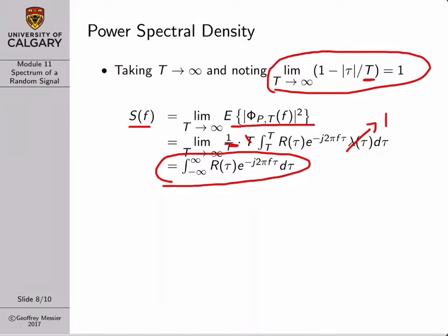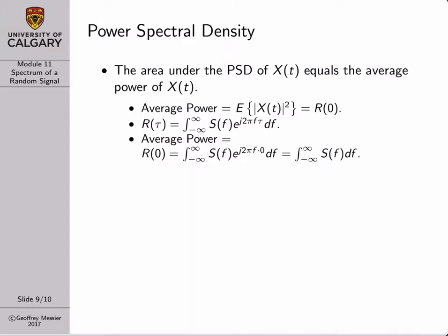This makes intuitive sense because the autocorrelation function can capture the rate of change of the signal. If the signal is changing very slowly, the autocorrelation function is a very gradual function, and its Fourier transform would be relatively narrowband with most energy concentrated at lower frequencies. If a random signal changes very suddenly, its autocorrelation function tends to be much sharper, and the Fourier transform of that sharp autocorrelation will show the signal's power spread across a wider range of frequencies.